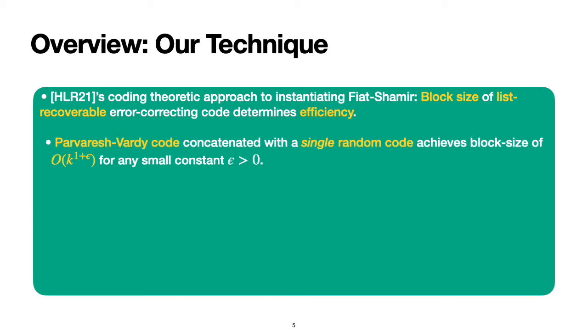They use a Parvaresh-Vardy code concatenated with a single random code and achieve a block size of O(k^{1+ε}) for any positive small constant ε > 0.